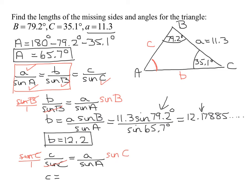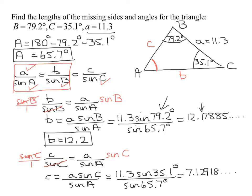Side C is A times sine C over sine A. That's 11.3 times sine of 35.1 degrees, divided by sine of 65.7 degrees. I got 7.12918... Rounding to one decimal place, the two doesn't round the one up, so C equals 7.1.